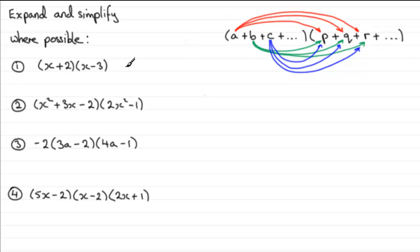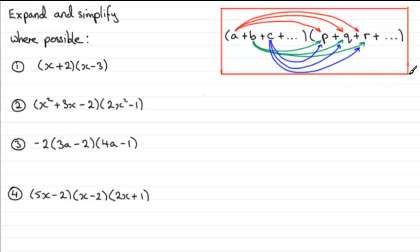So that's generally how we go about expanding these. Going back to the first example — notice I use the identical sign rather than equals; it's not an equation, we're just writing an identical expression. We take X and multiply it with the X here: X times X is X squared. Then X times minus 3 is minus 3X. Then 2 times X is 2X, and 2 times minus 3 is minus 6.